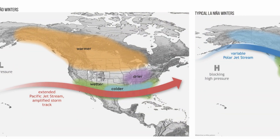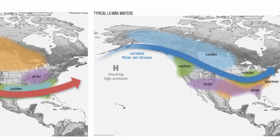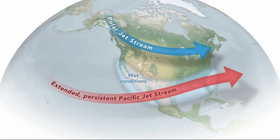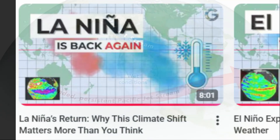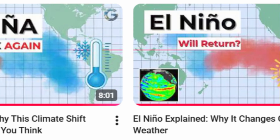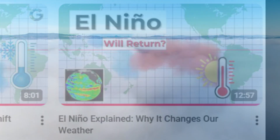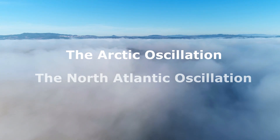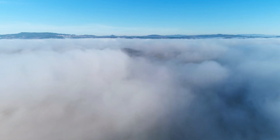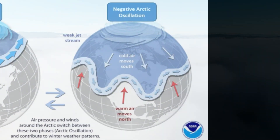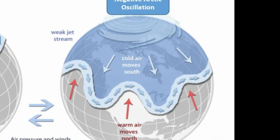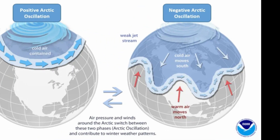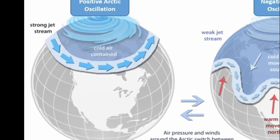The jet stream also works closely with El Niño and La Niña, which are part of the larger ENSO cycle in the Pacific Ocean. Changes in tropical ocean temperatures alter global pressure patterns, which in turn shift the position and strength of the jet stream. Another important interaction is with large-scale pressure oscillations, such as the Arctic oscillation and the North Atlantic oscillation. When these oscillations are in a negative phase, the jet stream tends to weaken and become more distorted, increasing the chance of cold air outbreaks and blocked weather patterns. When they are positive, the jet stream is usually stronger and more zonal, keeping cold air closer to the poles.